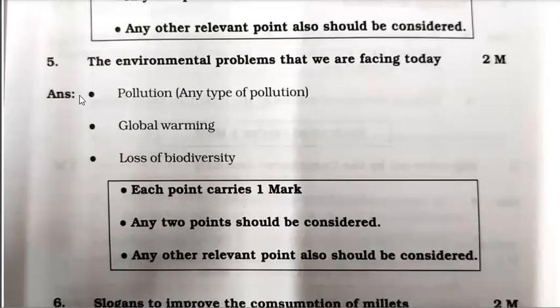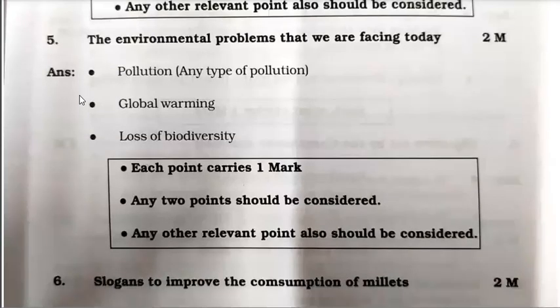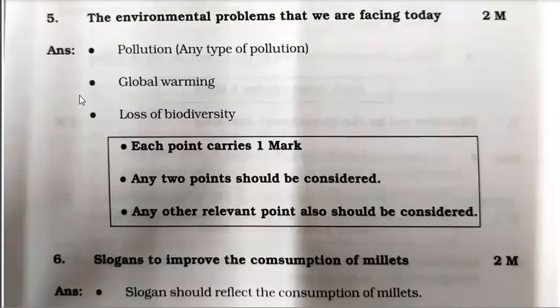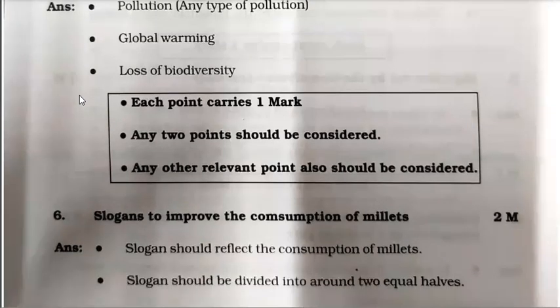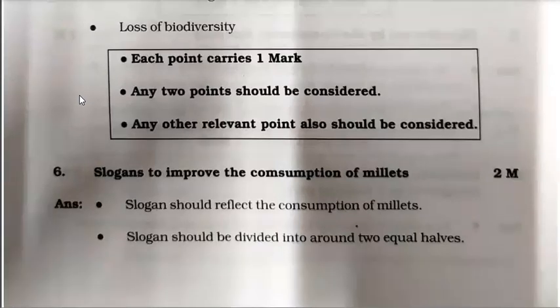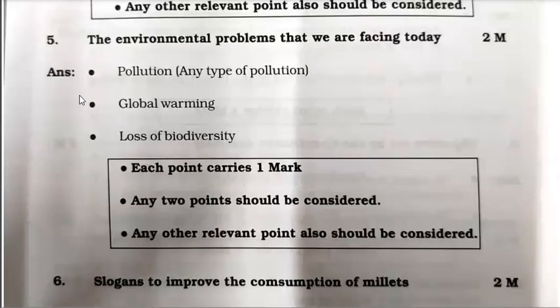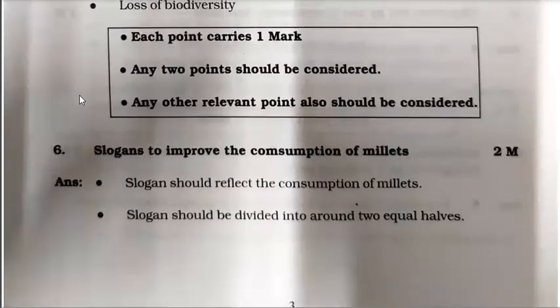The fifth question is on environmental problems we face today. Basic examples given are: global warming, loss of biodiversity, pollution — including sound pollution. Any type of pollution counts. Each point carries 1 mark; any 2 points should be considered. Relevant answers also should be considered. Pollution means any pollution: air, water, sound, global warming, loss of biodiversity, etc.